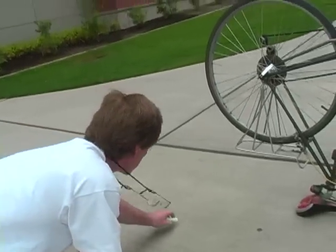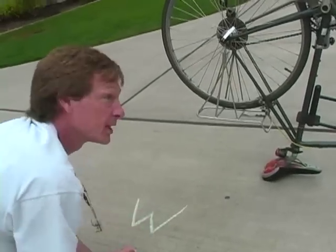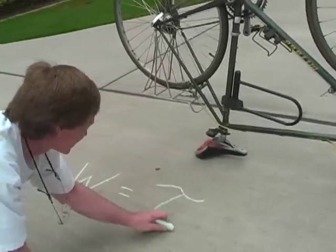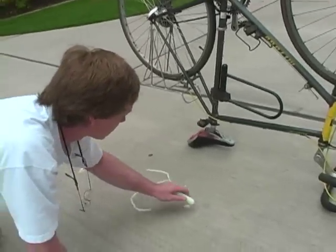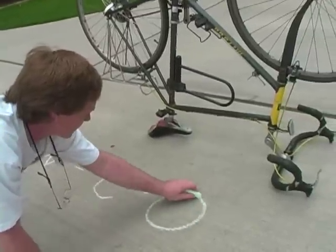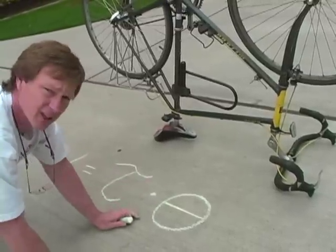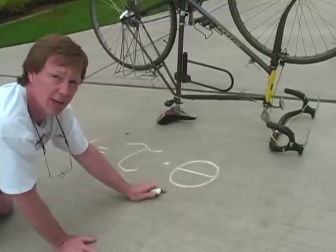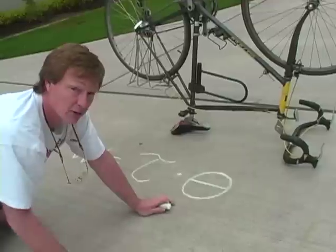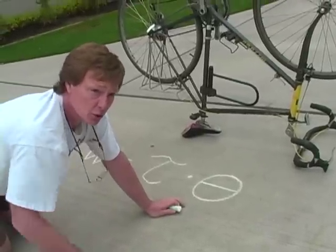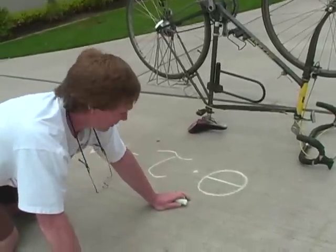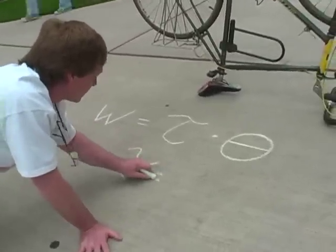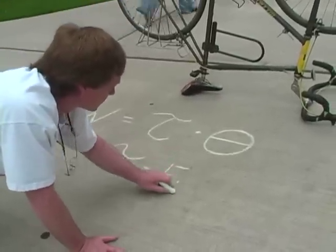Work — rotational work — is equal to torque, that's tau, times theta. Theta is the angle you move through — it's another Greek letter. So work is torque times theta. It's still going to give you units of foot-pounds in English units and newton-meters or joules in metric units.